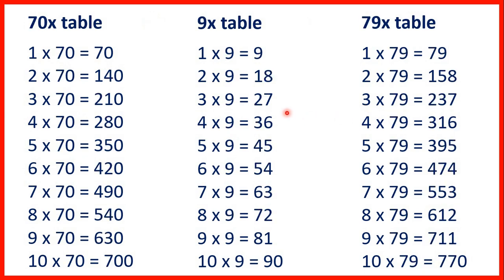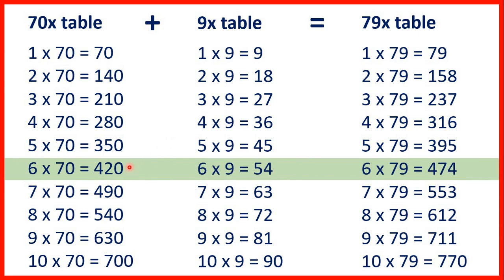Then our next question was 79 times 6, which is the same as 6 times 79. Again, if we add the 70 times table and the 9 times table we get the 79 times table. So we could work out 6 times 70 and then 6 times 9, and adding up those answers gave us the answer to 6 times 79.